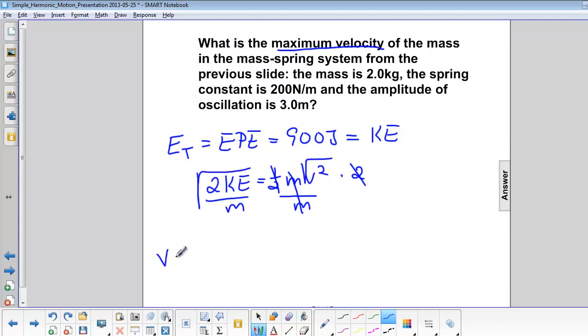So that we have v equals the square root of 2 KE over m. That is the square root of 2 times 900 joules divided by 2 kilograms, and that is 30 meters per second.